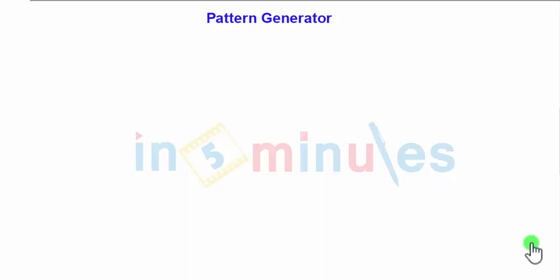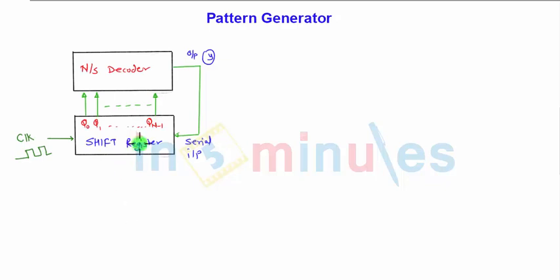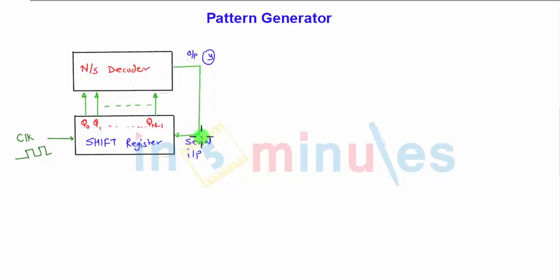To design a particular pattern, let us see how the shift registers are used. The shift register works on the clock pulse, shifting its bit position towards left or right, and parallel loading is also possible, having outputs Q0 to Q(n-1) where the shift register is of n bits. These outputs are given to the next state decoder which generates the sequence, and the output is fed back as a serial input to the shift register.